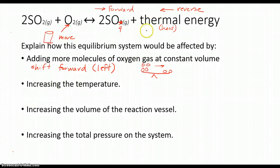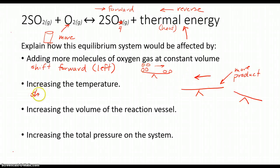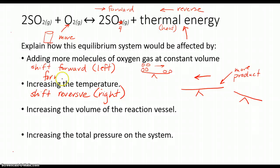For increasing the temperature: look at thermal energy as heat. If I add more heat, that means in terms of our balance, I now have more on the product side — because heat is listed as a product. So the balance is off scale, and to bring it back to equilibrium, you're going to have a reverse shift — to the left. So you predominantly have a reverse reaction happening.